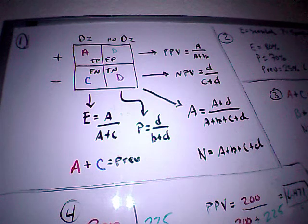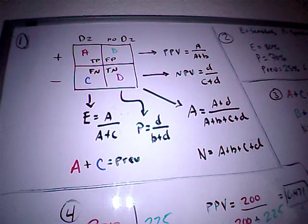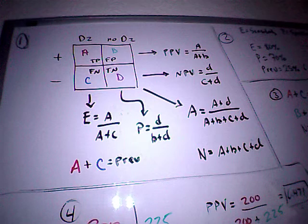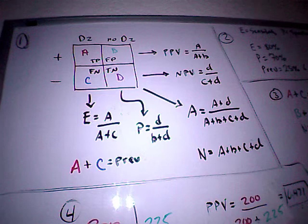So task two asks the following: Given a test sensitivity of 80 percent and a test specificity of 70 percent and a disease prevalence of 25 percent, calculate positive and negative predictive values for individuals who test positive and negative respectively on the test.